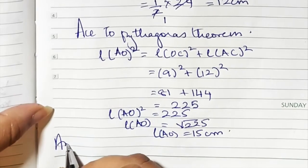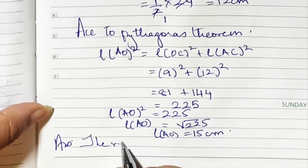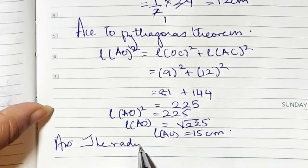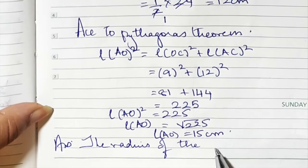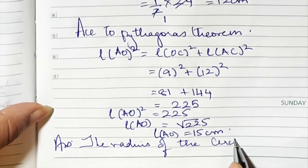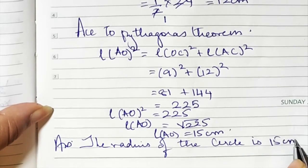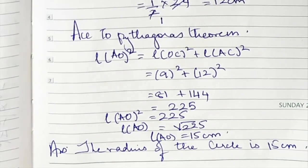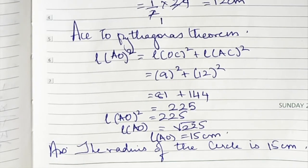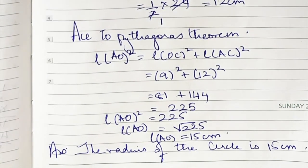Therefore the radius of the circle is 15 centimeters. Sum number four is similar to sum number two, so once you understand sum number two you will be able to do sum number four on your own.